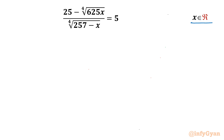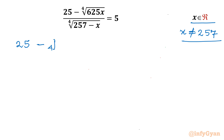We have to find the real solutions. Let us get started by writing the domain. The denominator cannot be 0, so x cannot be equal to 257. Now I can cross multiply, so the equation will become: 25 minus the 4th root of 625x equal to 5 times the 4th root of 257 minus x.